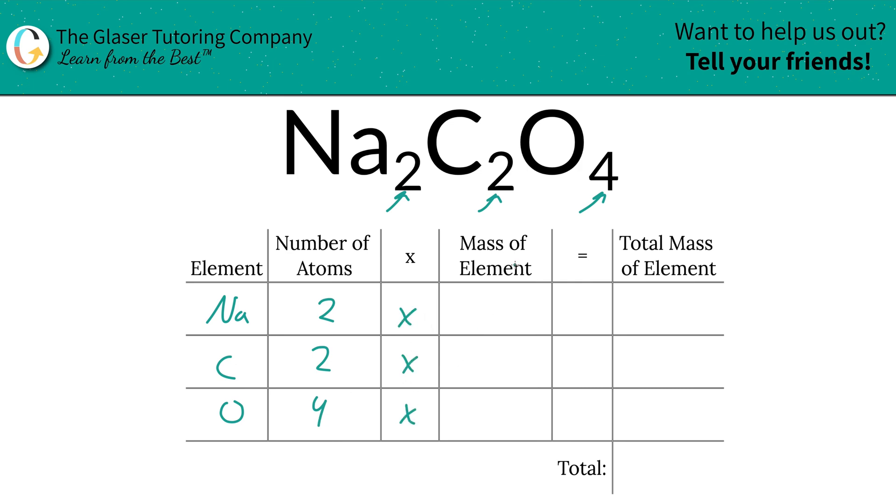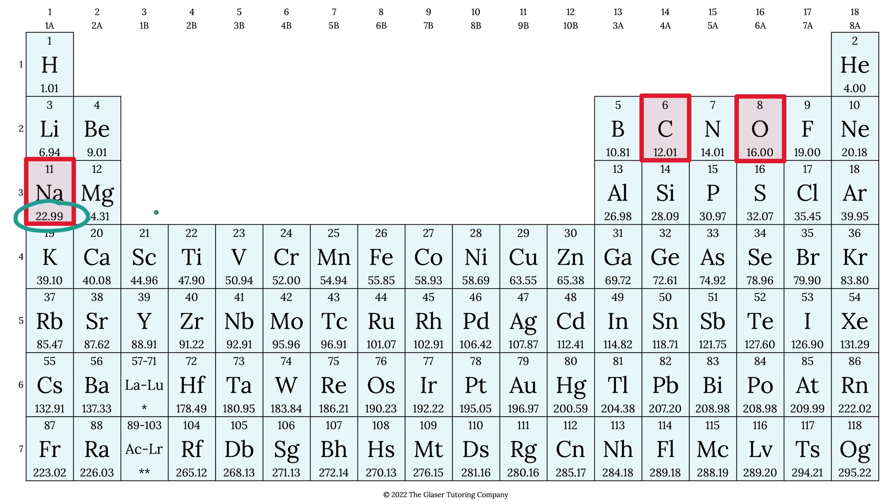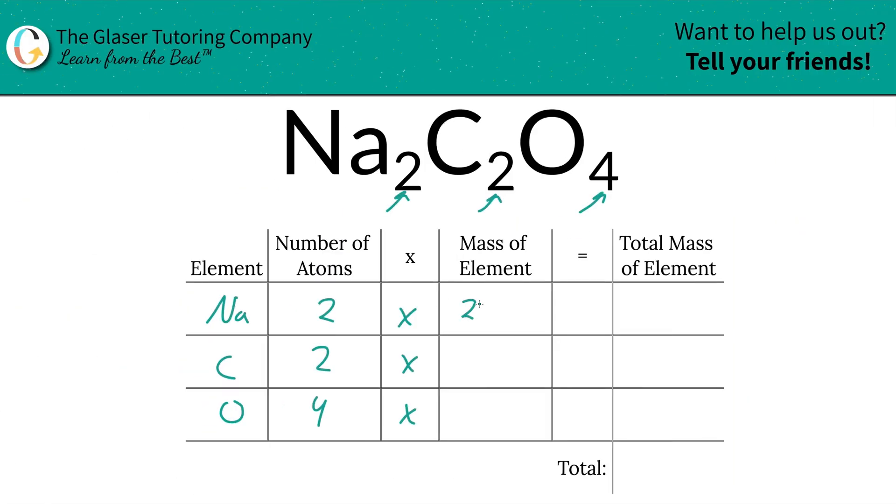Then we're simply going to multiply those number of atoms by the mass of each particular element. Those masses are found on the periodic table. Sodium's mass is 22.99, carbon is 12.01, and oxygen is 16. So let's write them in. 22.99, carbon 12.01, and oxygen 16.